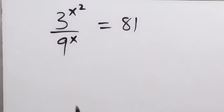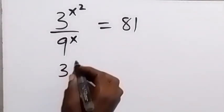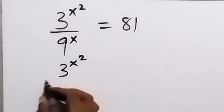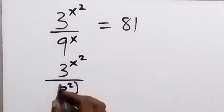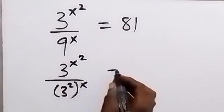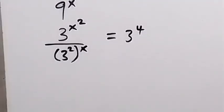From here, we can write this again in this form, and we have 3 raised to power x squared, then divided by 3 raised to power 2, then raised to power x, which is equal to, on this side, we have 3 raised to power 4 to be the same thing as 81.